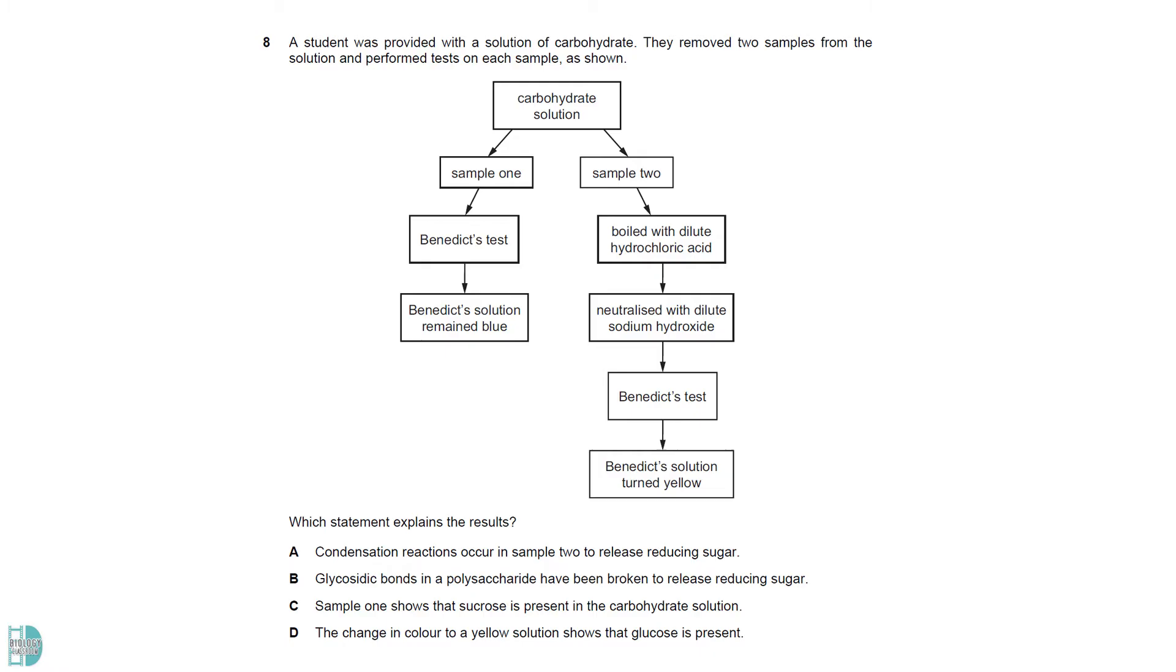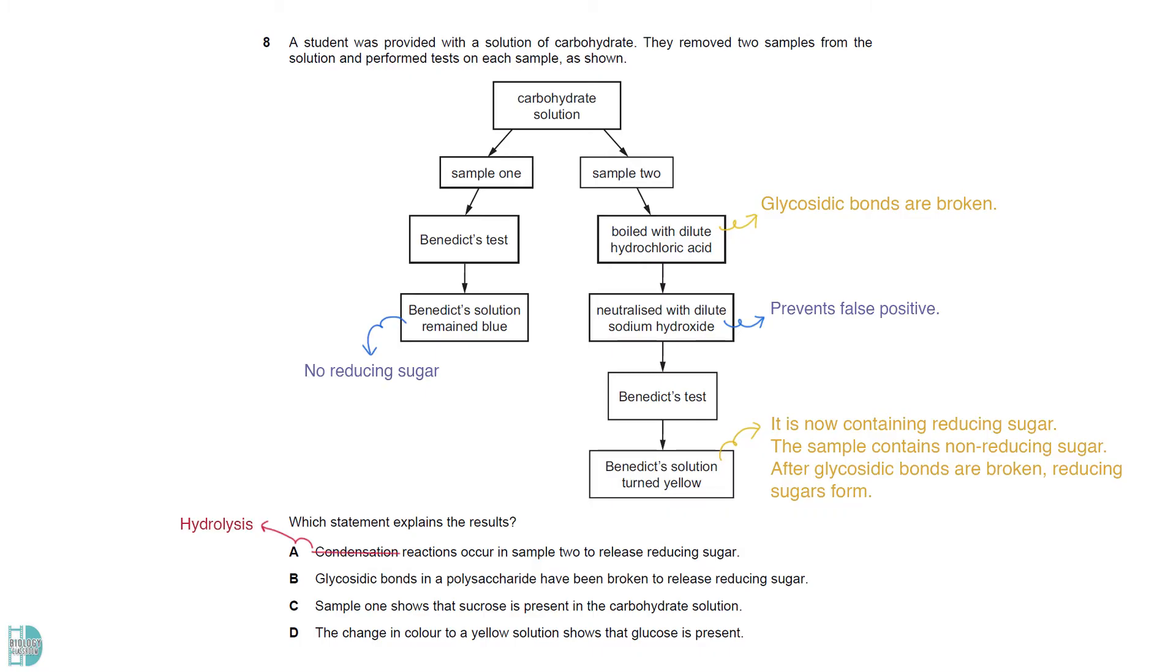The result of sample 1 shows that it does not contain reducing sugar. In sample 2, glycosidic bonds are broken when the sample is boiled with diluted hydrochloric acid. The neutralization step is performed to prevent a false positive due to the acid. A color change in the Benedict's test shows that it now contains reducing sugar. A is wrong because the bonds are broken by hydrolysis, not condensation. B is correct. After the glycosidic bonds are broken, reducing sugars form and give a positive result in Benedict's test.